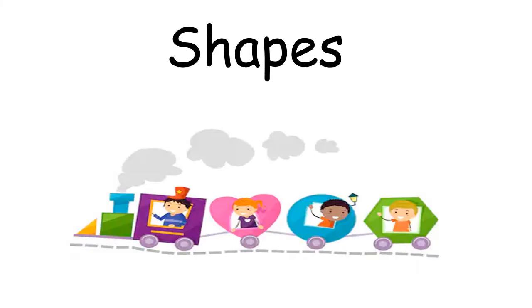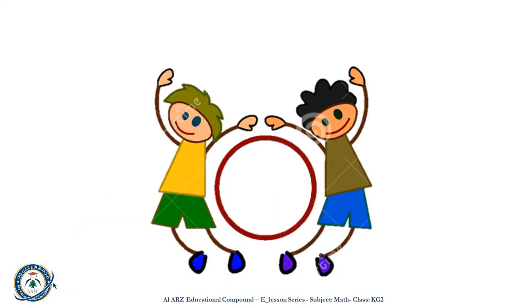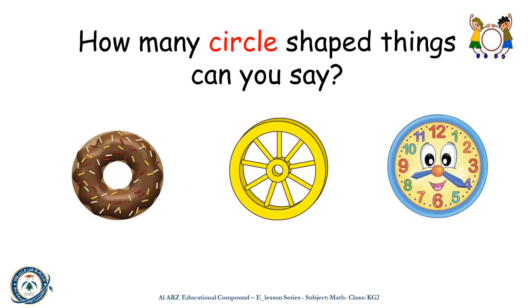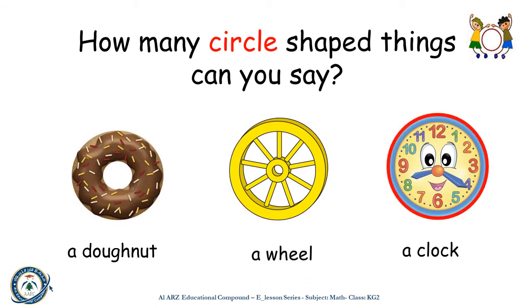Shapes. I have one curved side. I have no corners. Who am I? I am a circle. Great! How many circle-shaped things can you say? A doughnut, a wheel, a clock. They look like a circle.